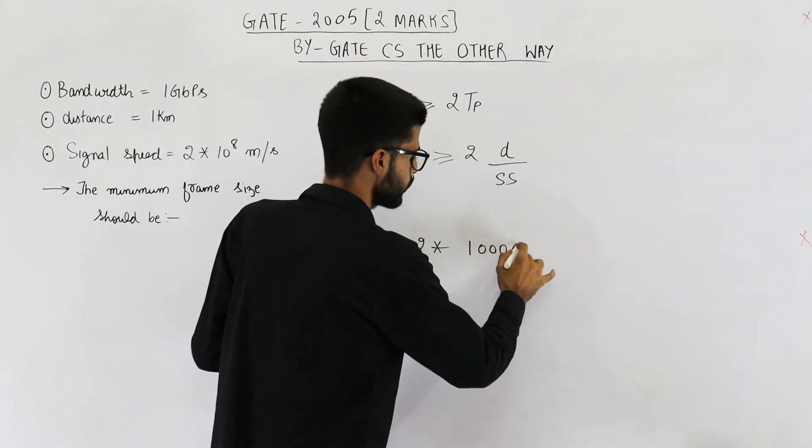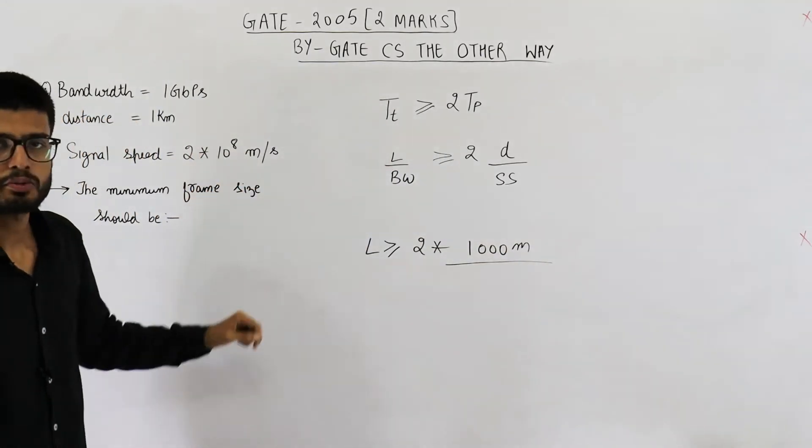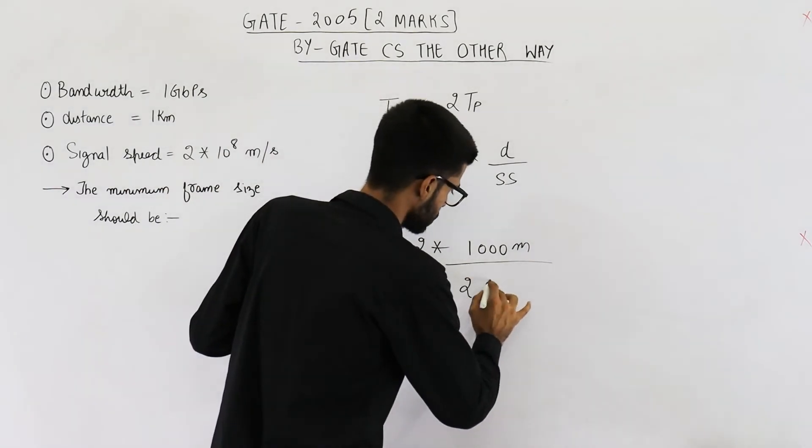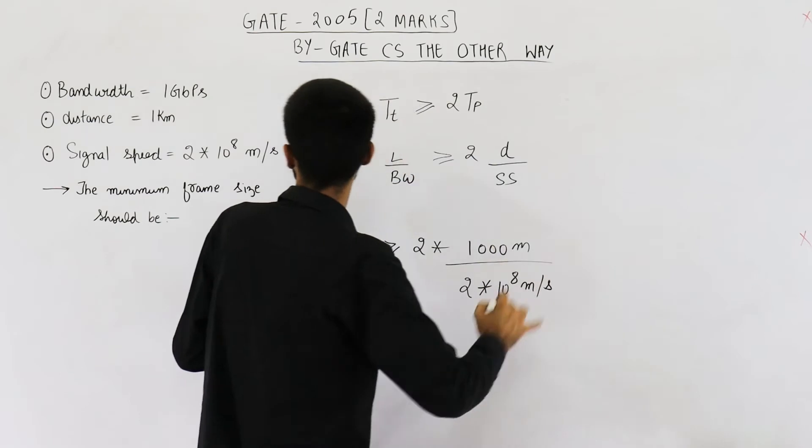This is 2 into 10 raised to the power 8 meters per second. And this bandwidth will be multiplied by the right hand side.